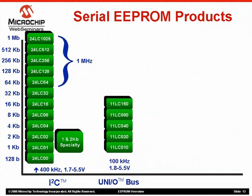Next is our UNEO EEPROM family, which is available in 1 through 16 kbit options. It has a voltage range of 1.8 to 5.5 volts and a maximum speed of 100 kHz. Remember that these new products require only one connection to the master.